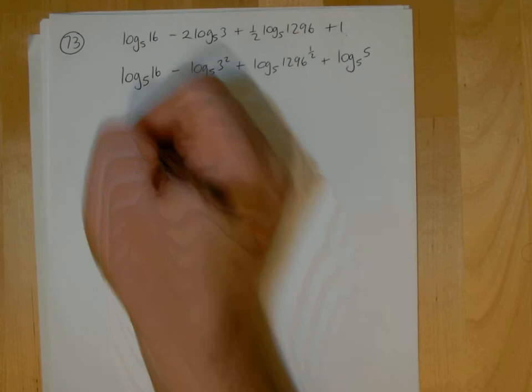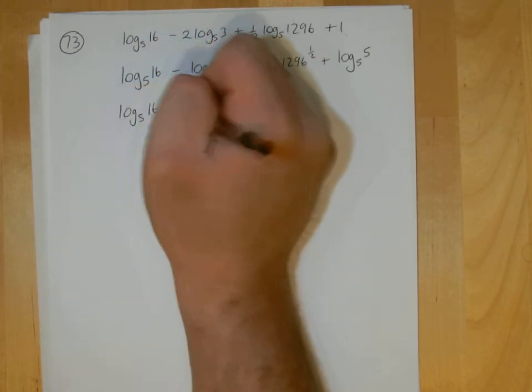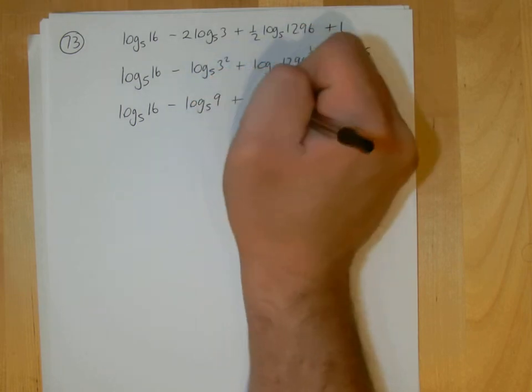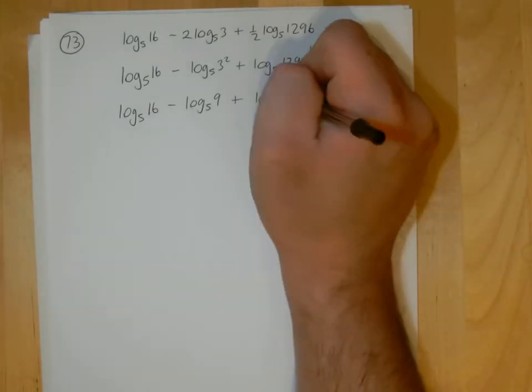So then we can work that out. Three squared is nine. And then we can work out 1296 to the power half. Let's just work on a calculator - it's just a square root effectively. 1296, and you get 36.